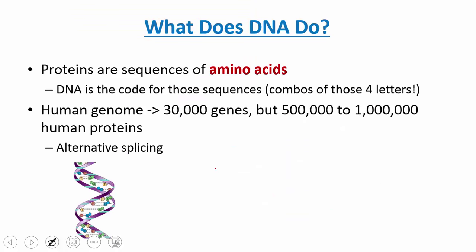What does DNA do? DNA is something that can be used to make proteins. For an intro course, the goal of having a gene is to make a protein — that's the main function. The human genome has about 30,000 genes — this number is always changing, but it gives a general idea. Each of those genes can produce different proteins, and those proteins can be spliced different ways, so you can get up to a million different types of proteins.